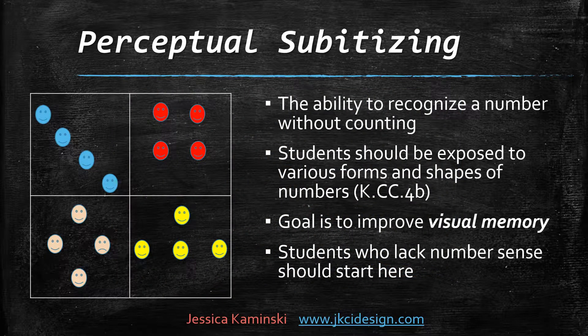Perceptual subitizing is the first thing we're going to talk about — that's the ability to recognize a number without counting. Like when you look at dominoes and you know the number without having to count it. That's a kindergarten standard in counting and cardinality, where students see multiple representations and are able to recognize the number without going one, two, three, four.